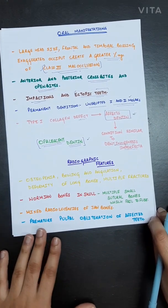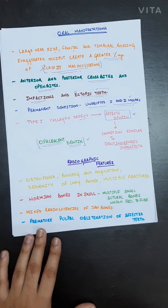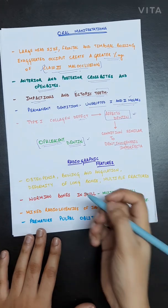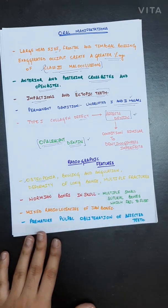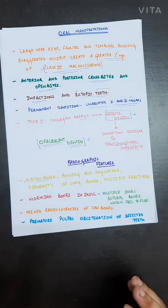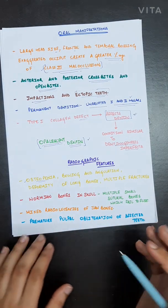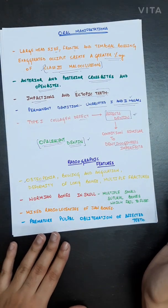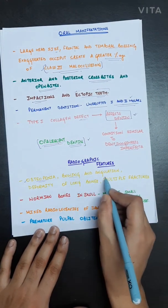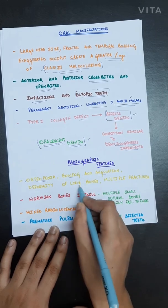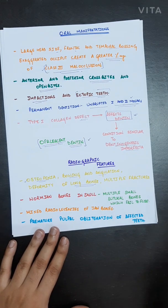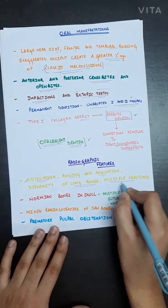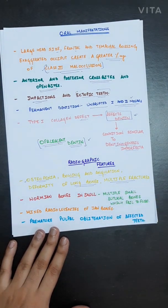Radiographic features of osteogenesis imperfecta include osteopenia with a tendency for fractures and defective bone healing. Bowing, angulation, and deformity of long weight-bearing bones are seen, along with multiple fractures visible on imaging.